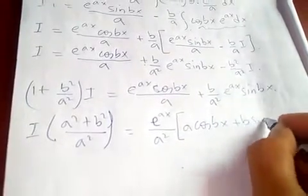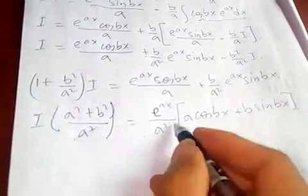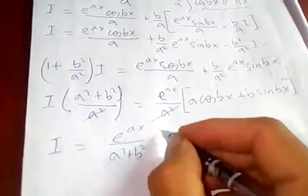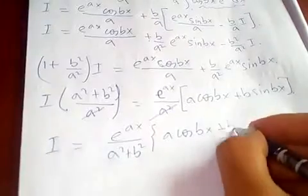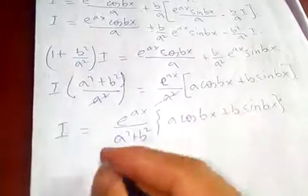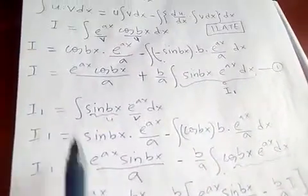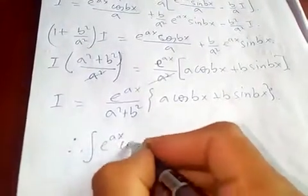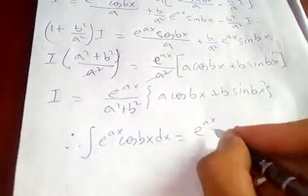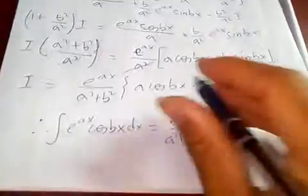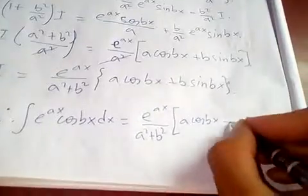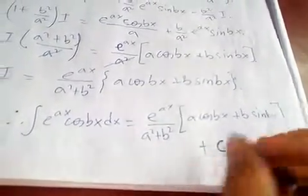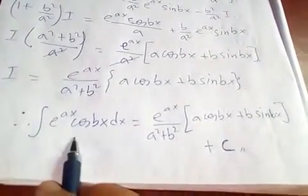Taking a squared as a common factor on the right side, we get e to the ax over a squared times the quantity a·cos bx plus b·sin bx. The a squared cancels, so finally I equals the integral of e to the ax cos bx dx equals e to the ax over a squared plus b squared, times the quantity a·cos bx plus b·sin bx, plus the constant of integration. Don't forget the constant since this is an indefinite integral.